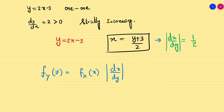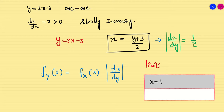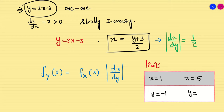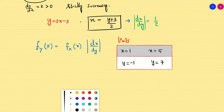Now we find the new limits. When x = 1, y = 2(1) - 3 = -1. When x = 5, y = 2(5) - 3 = 7. So the new limits for y are [-1, 7].